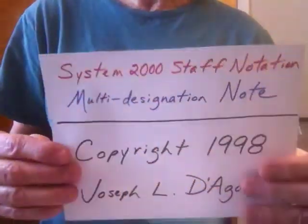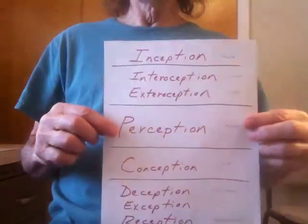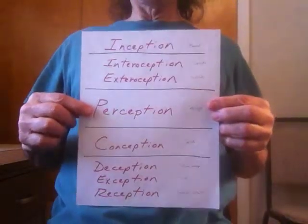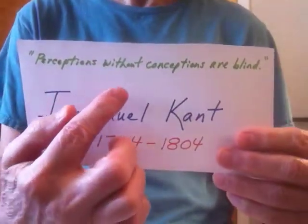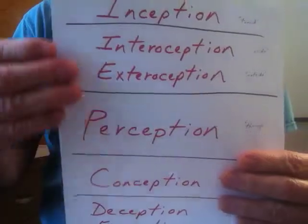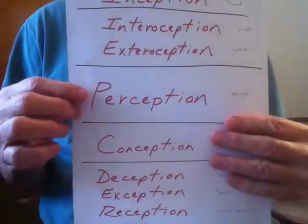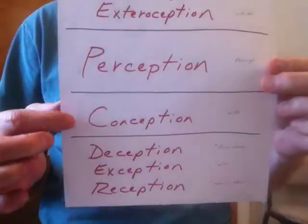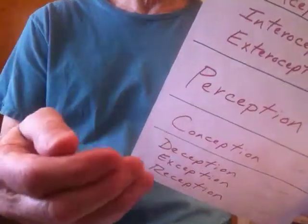Today I want to continue with my talk about System 2000 staff notation. I actually get to it this time. I talked about Immanuel Kant and showed you my modified Immanuel Kant thought system. Kant said perceptions without conceptions are blind, and he was right — what's the point of spending days or months or years thinking about something and having all these perceptions and not organizing them or putting them to good use?